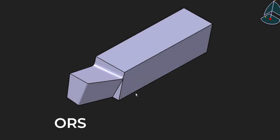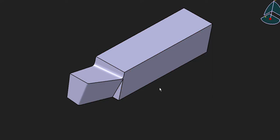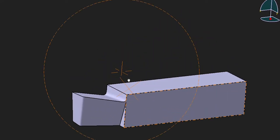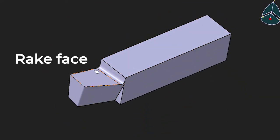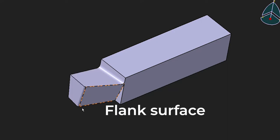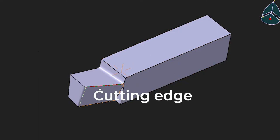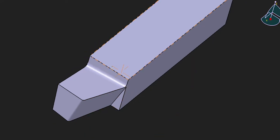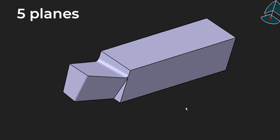Let's talk about our system of tool designation. ORS means Orthogonal Rake System. This is a single-point cutting tool — this is a CAD model. This is a rake face, this is the flank surface, this is the principal flank surface, and this is the auxiliary flank surface of this tool. This edge is called the cutting edge, and this fillet is called the nose radius.